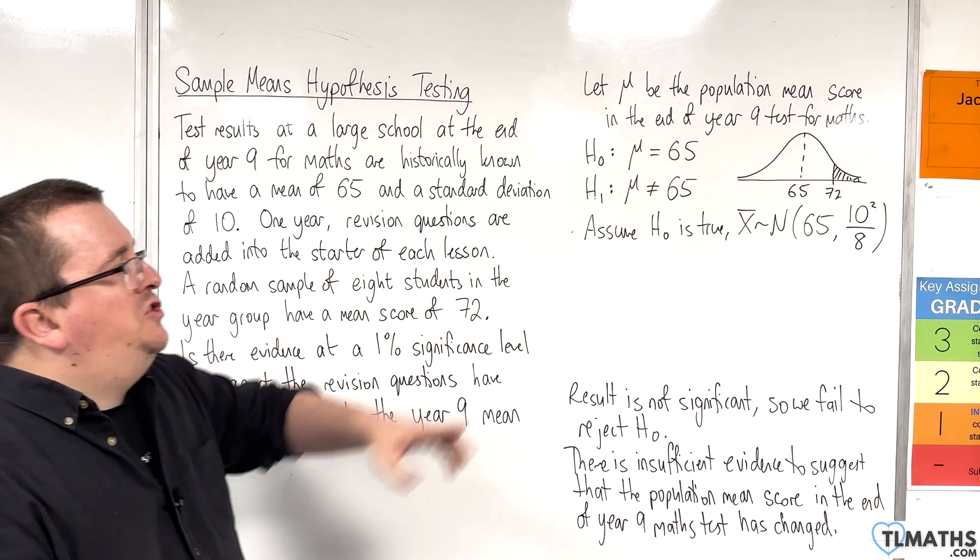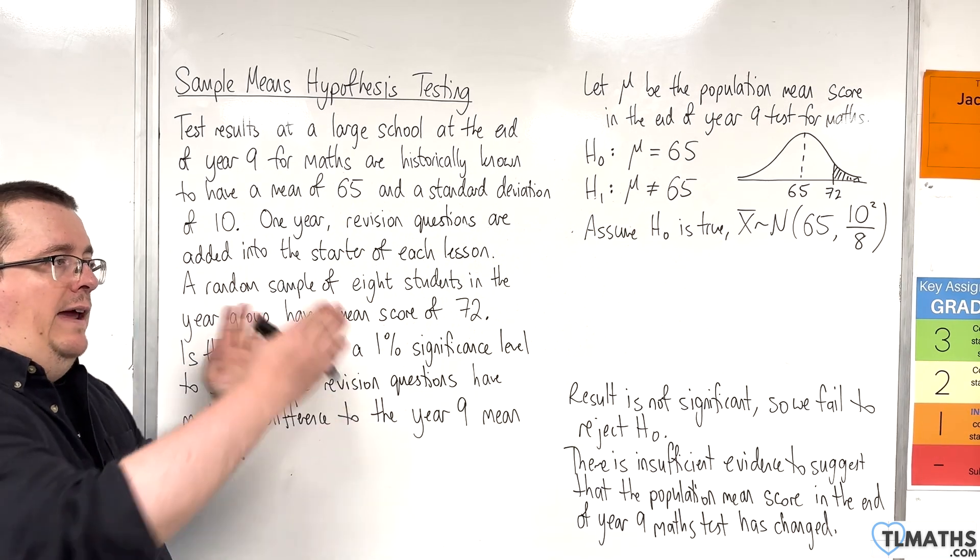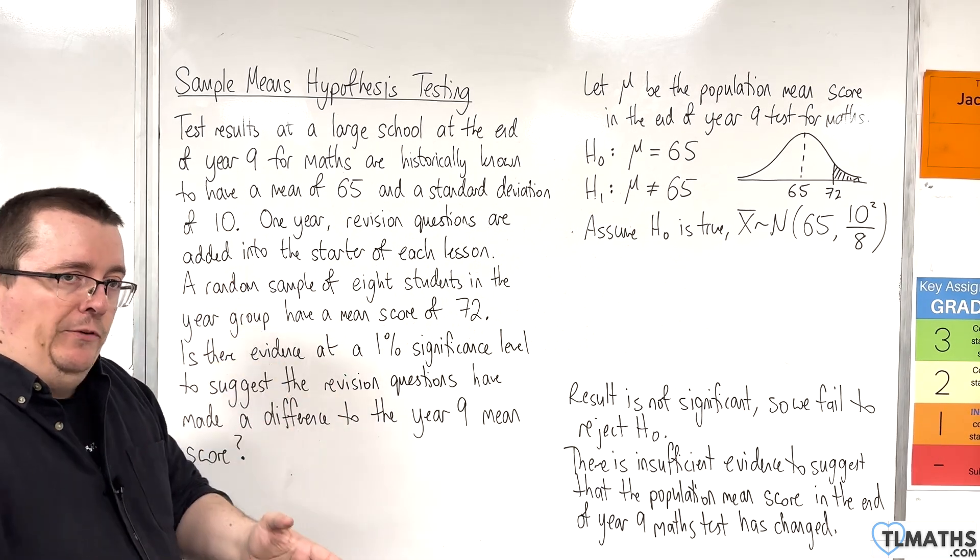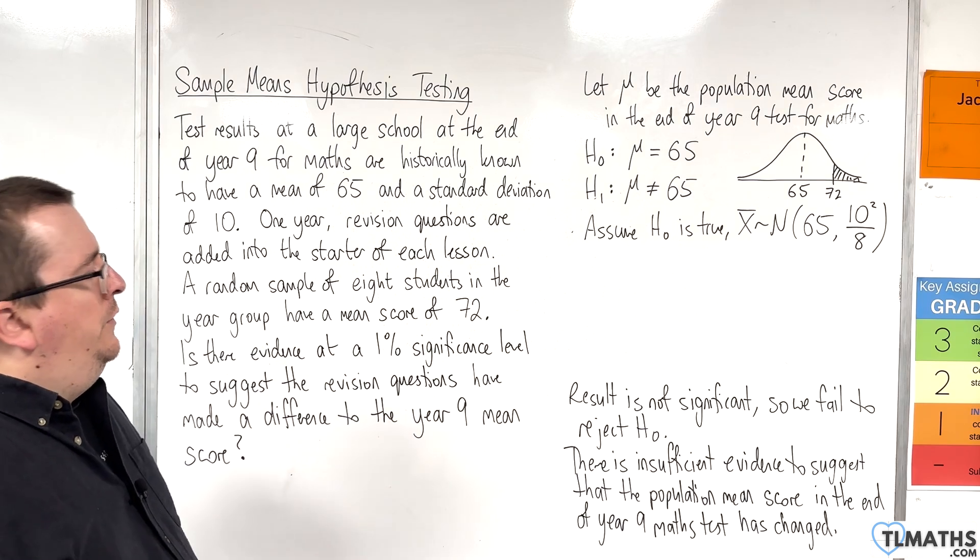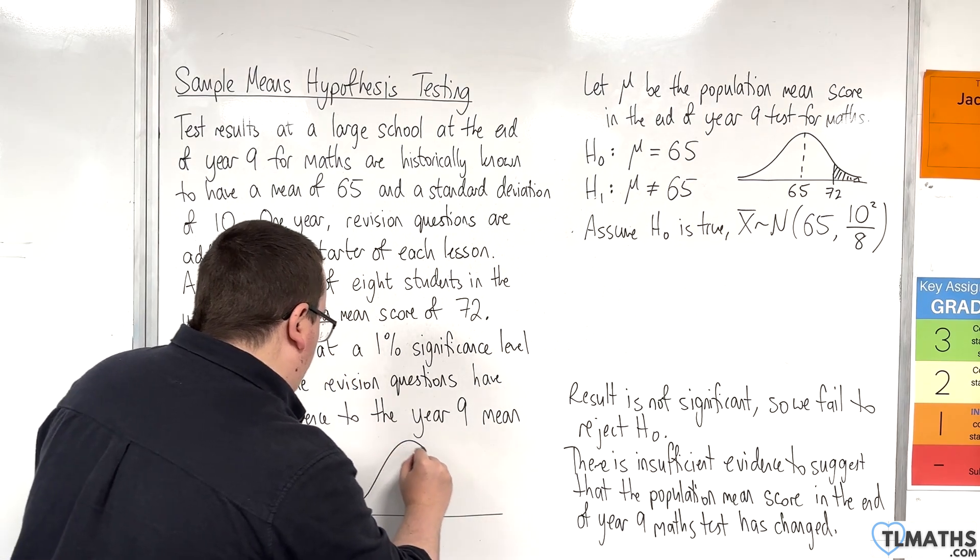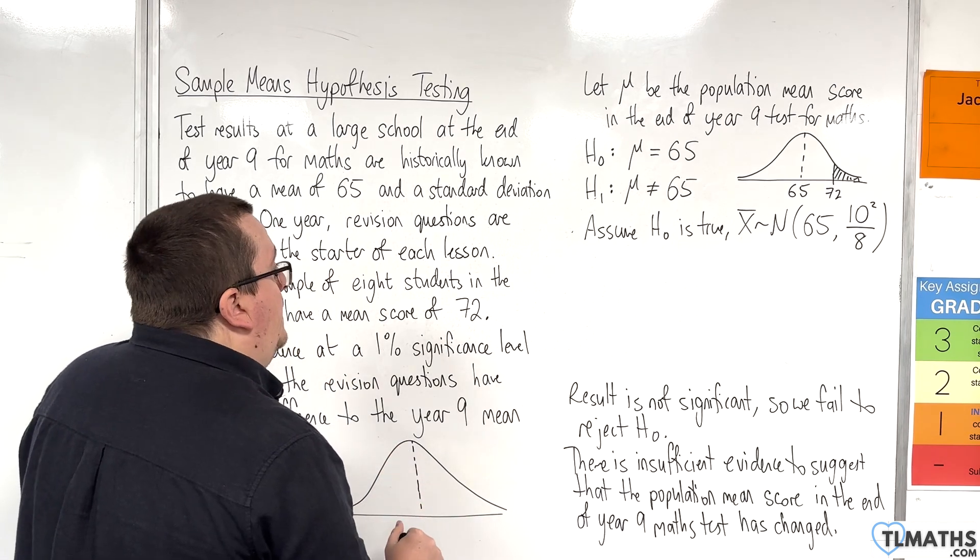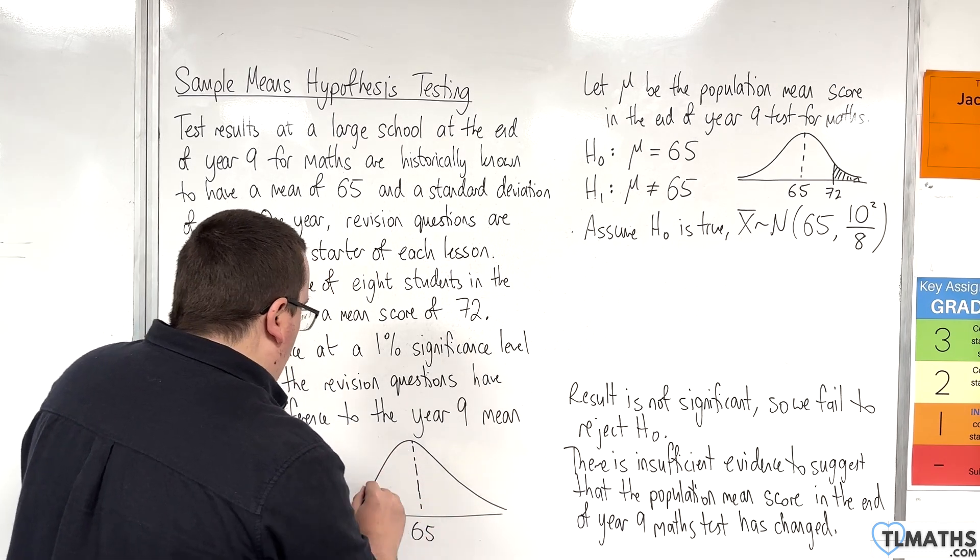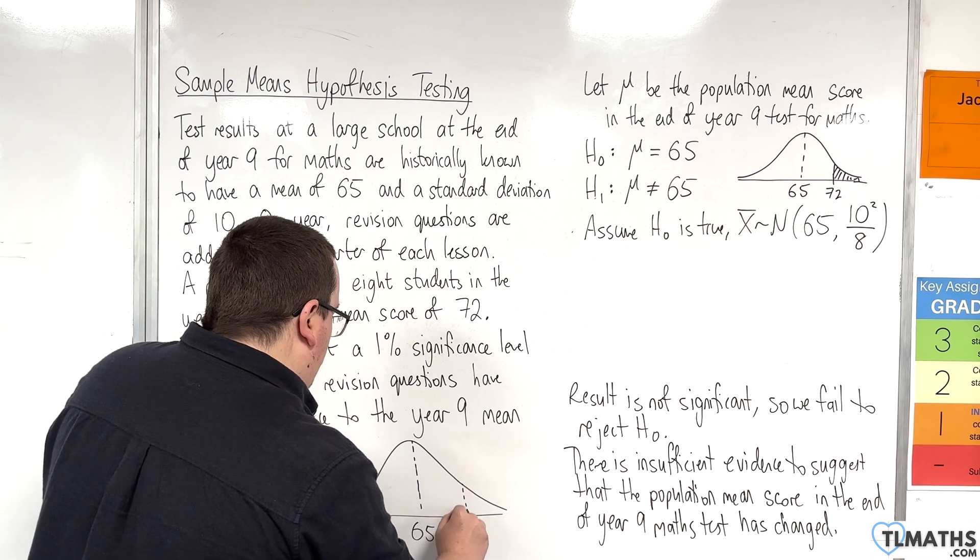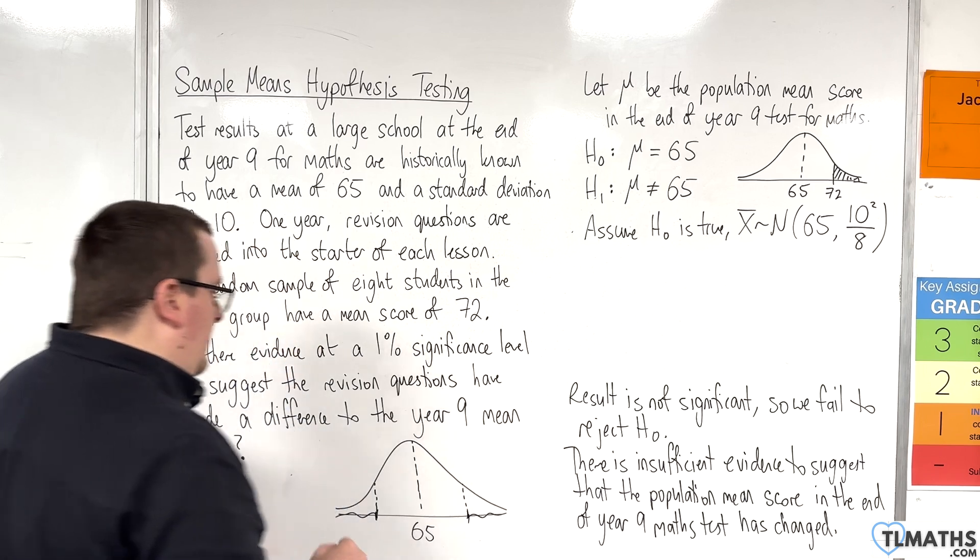Now, because we're looking at a two-tail test, the critical region, there is a lower section and an upper section. So, I need to find both of these to identify the critical region. So, my mean is 65 and I need to look at both sections. My critical region will be there and there.